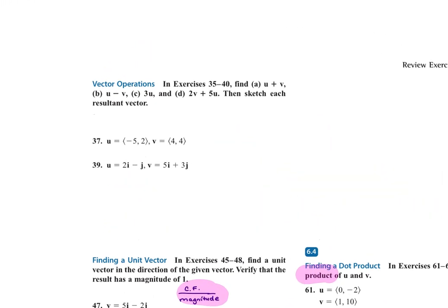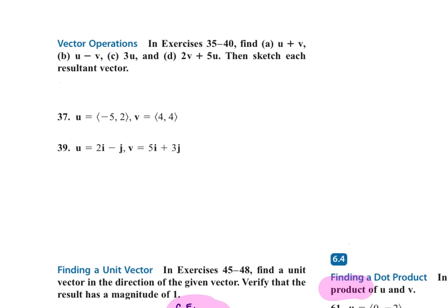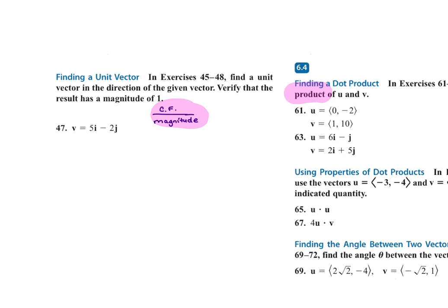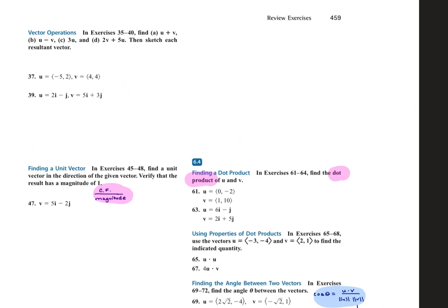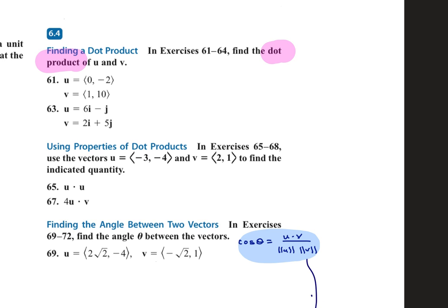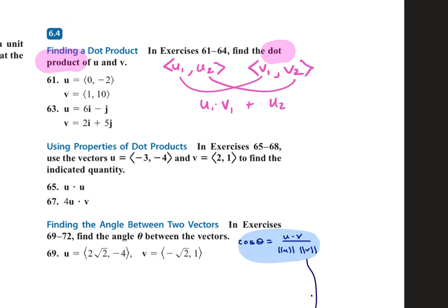Then we get into finding the sum of vectors — adding, subtracting, and scaling vectors in both component form and IJ format. For finding the vector in the same direction, you put the component form over the magnitude — that's highlighted in pink, meaning you need to know it. The dot product: if you have U1 comma U2 and V1 comma V2, you find the dot product by multiplying U1 times V1 and adding it to U2 times V2. The dot product is just one individual number.